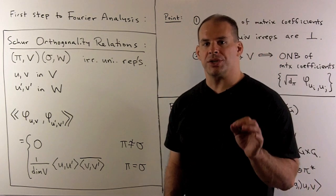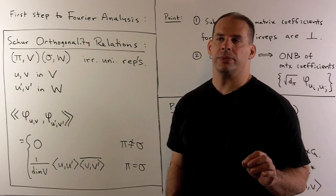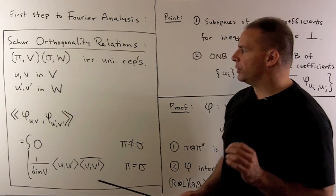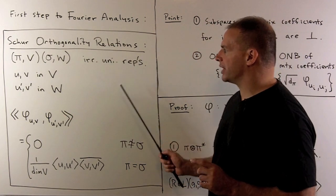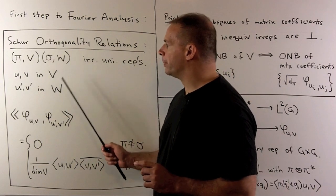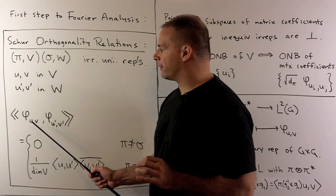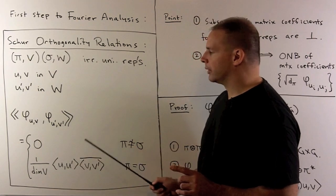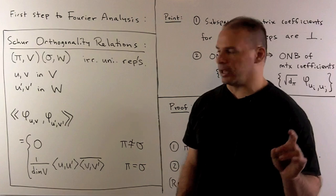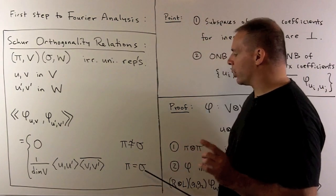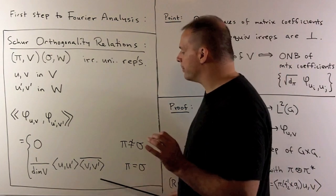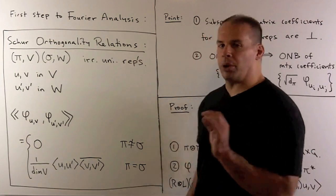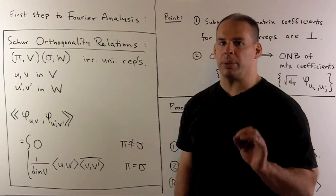For the first step of Fourier analysis, this result is the short orthogonality relations. We take two irreducible unitary representations, pi on V and sigma on W, form a matrix coefficient for pi and a matrix coefficient for sigma, and take the inner product. If pi and sigma are inequivalent, we get zero. If pi and sigma are equal, we get a specific expression. If pi and sigma are equivalent, we get a related expression, but we need to put in the equivalence map in the correct places.